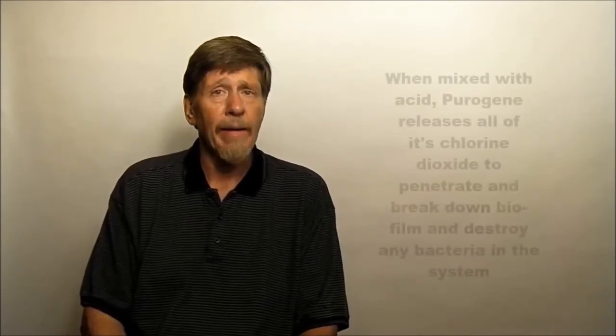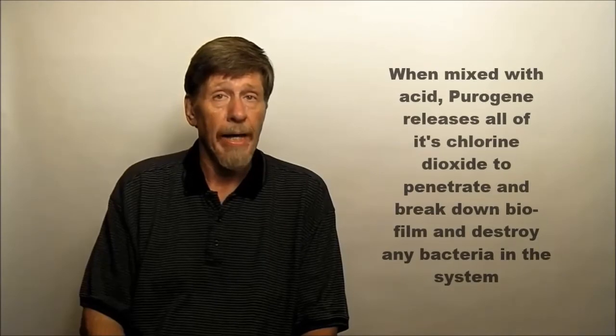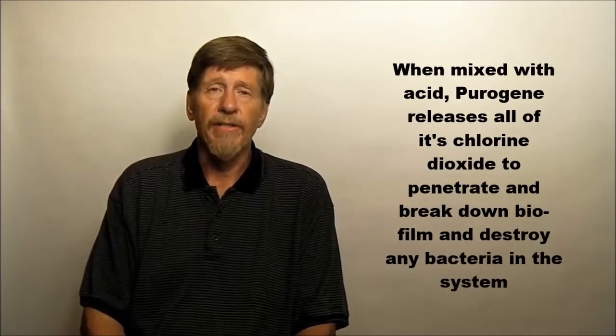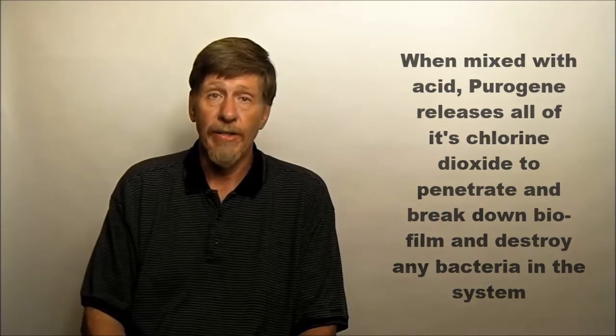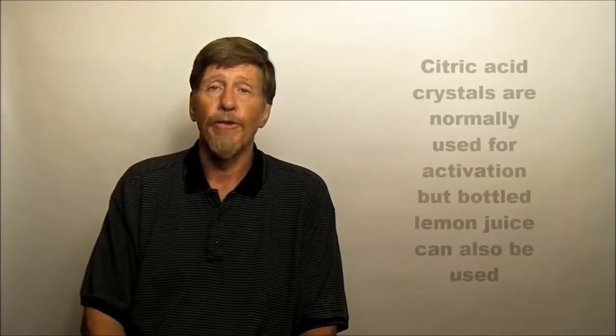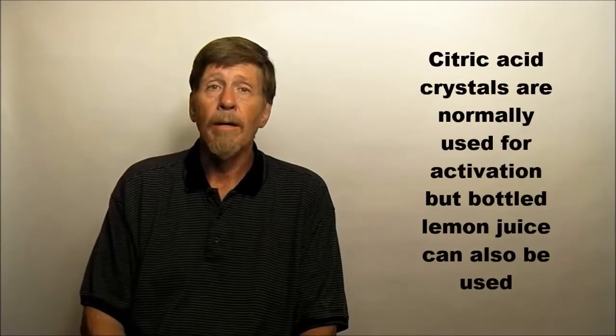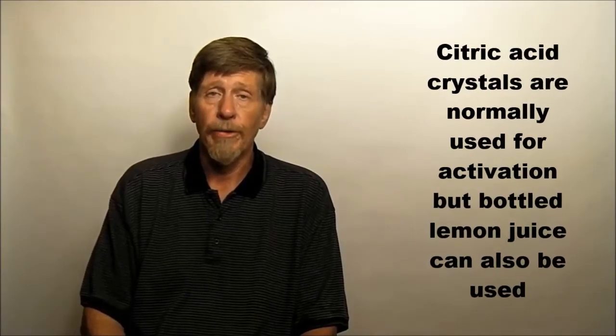Purigene is activated by things that are acidic or low pH. To do system disinfection, we add acid directly to the Purigene before putting it into the system. Generally, citric acid crystals are used for the activation. However, bottled lemon juice can also be used.